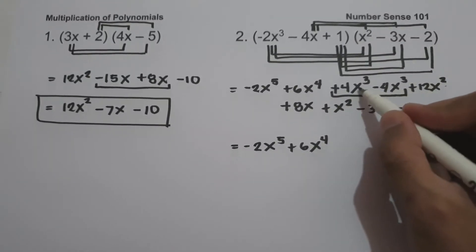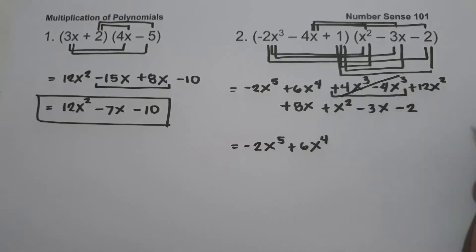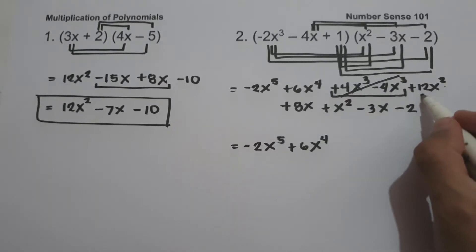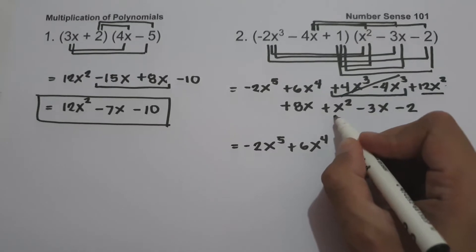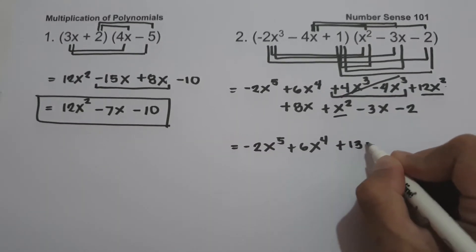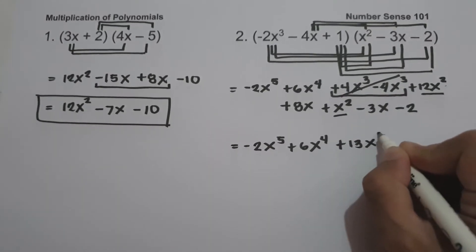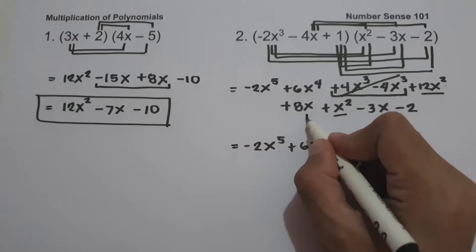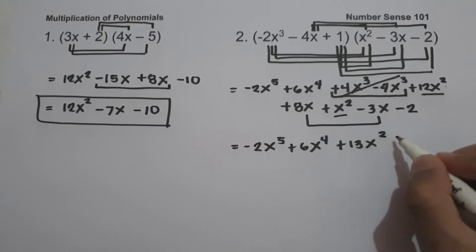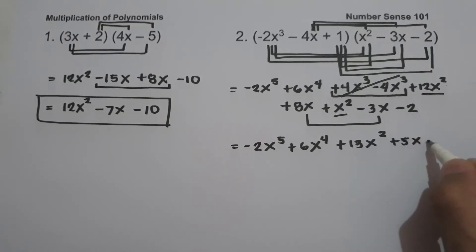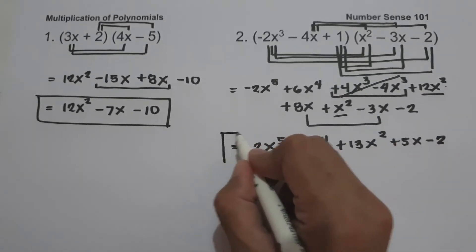4x cubed minus 4x cubed is 0, so we cancel that. Then 12x squared plus x squared is 13x squared. Then 8x minus 3x is 5x. And then negative 2. This will be our answer.